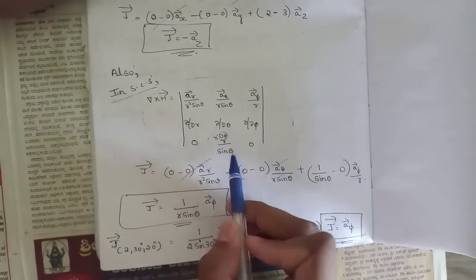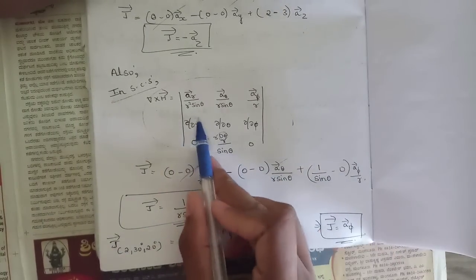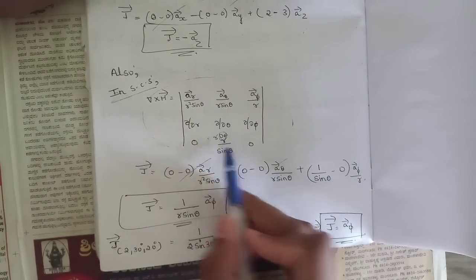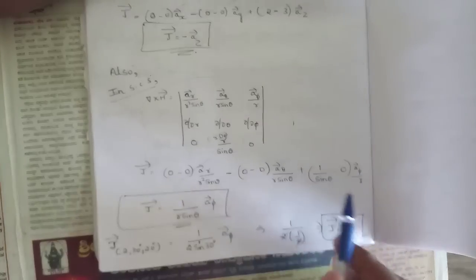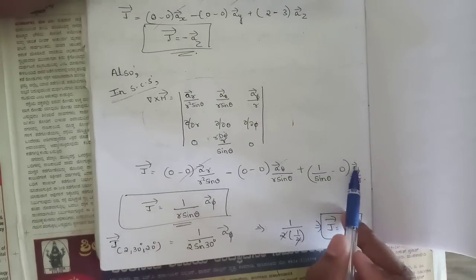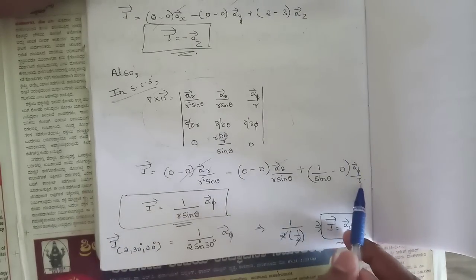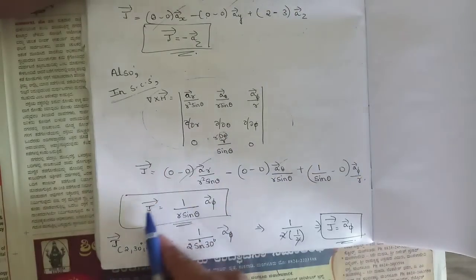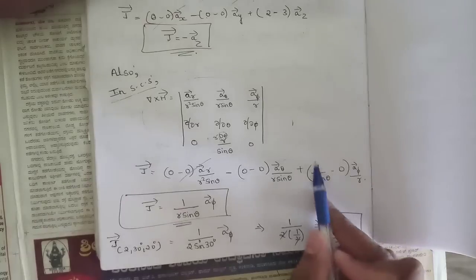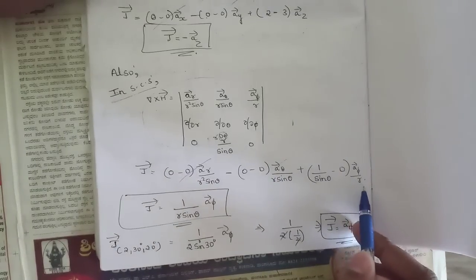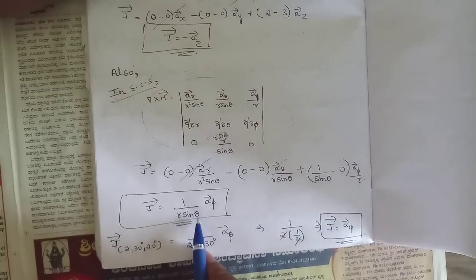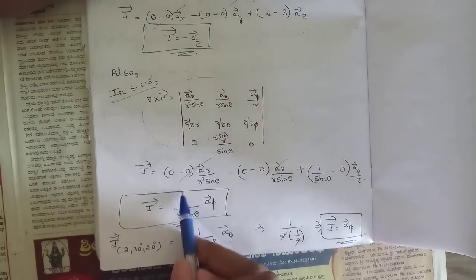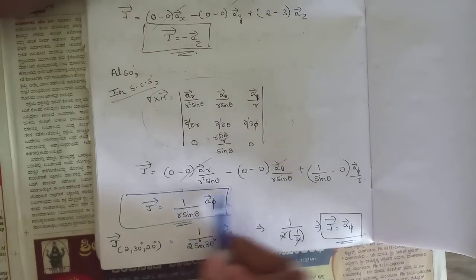Taking the determinant: the ar and aθ terms are zero. For the aφ term: (1/sinθ)(∂/∂r)(r/sinθ) − 0 = (1/sinθ)(1/sinθ) = 1/sin²θ. Multiplied by aφ/r gives J = (1/(r sin²θ)) aφ.